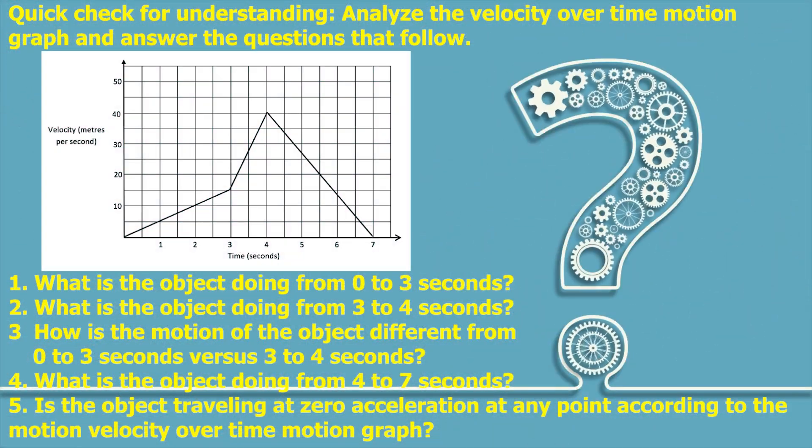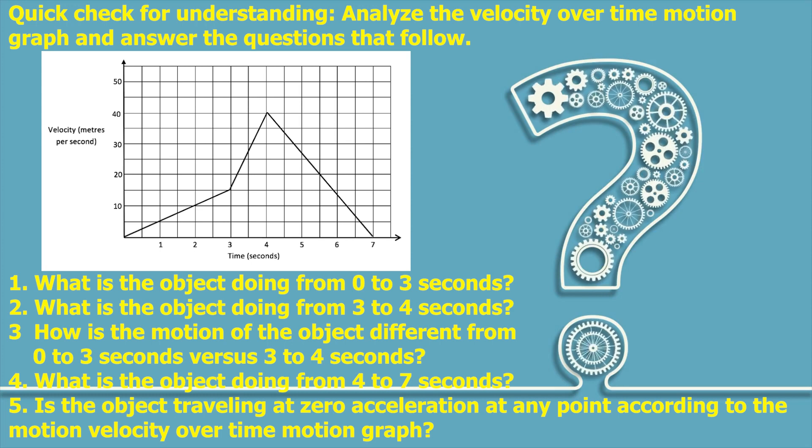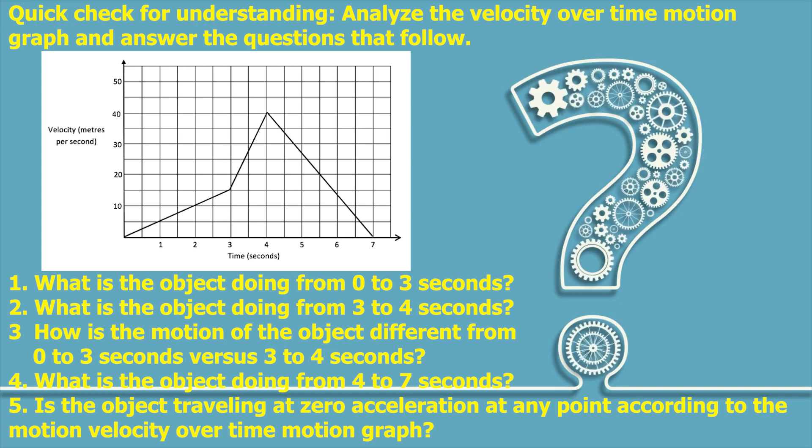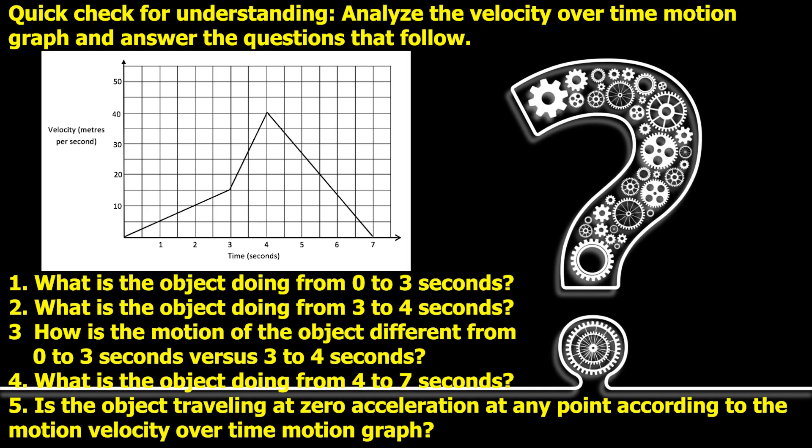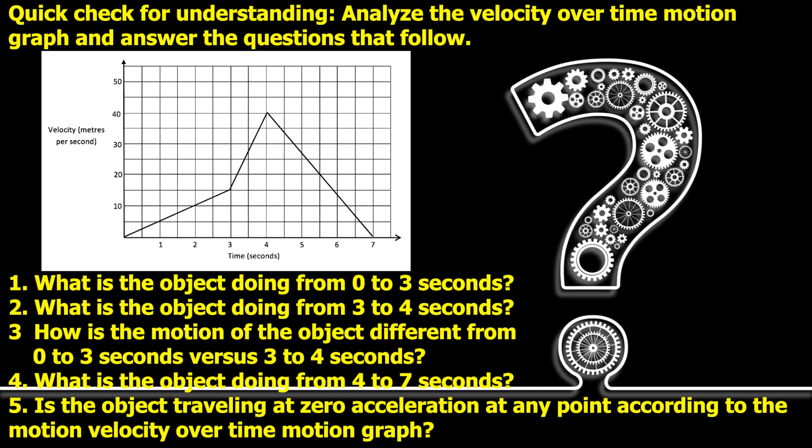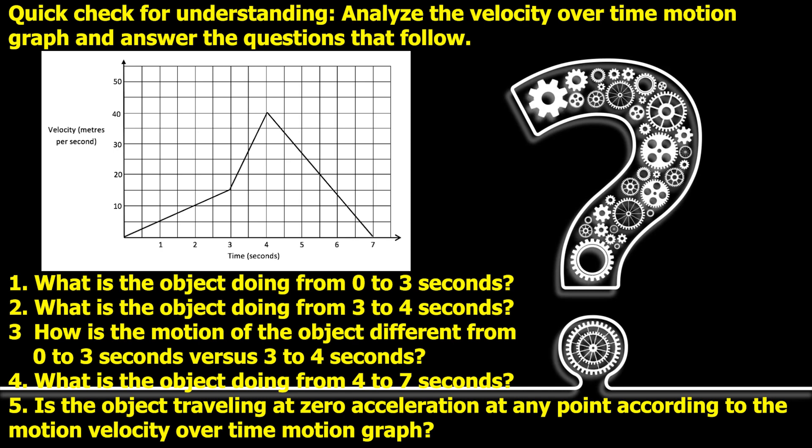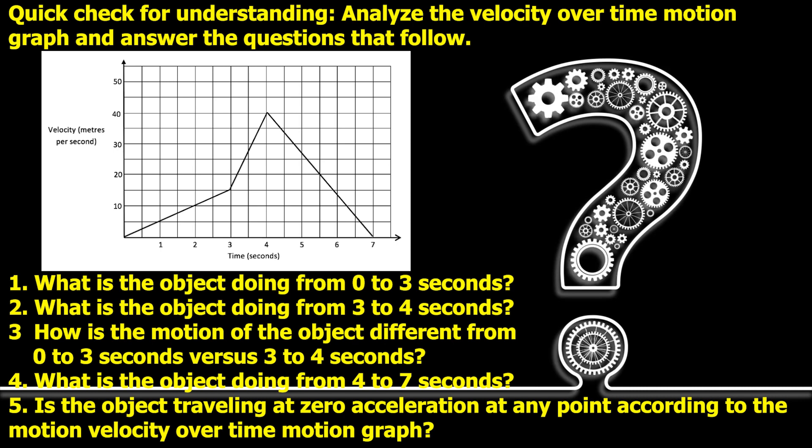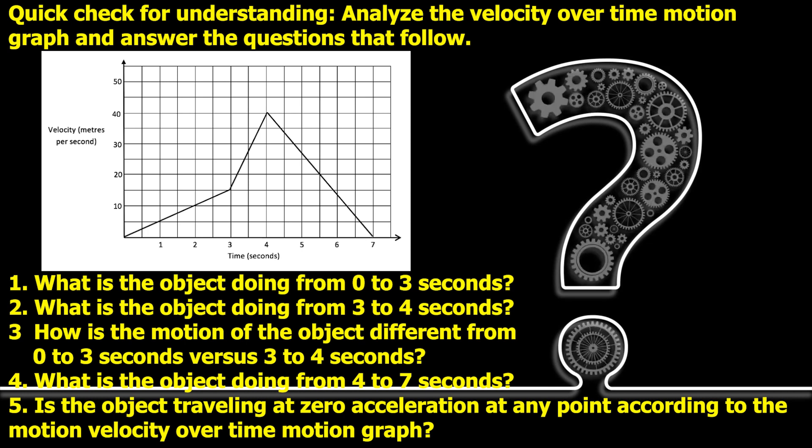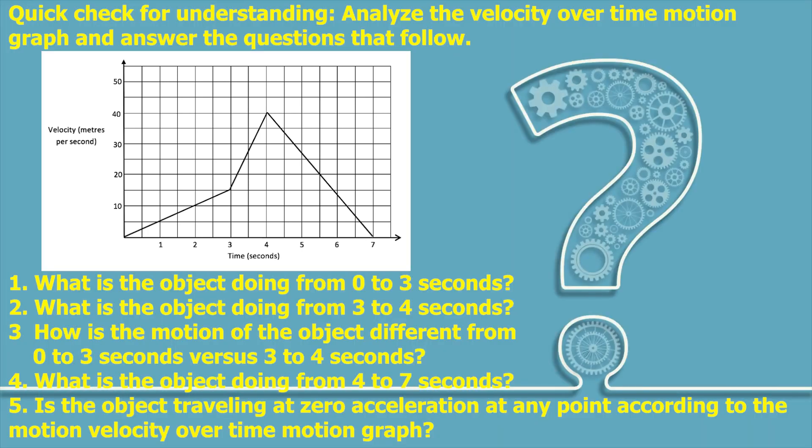Quick check for understanding. Analyze the velocity over time motion graph and answer the questions that follow. Number one, what is the object doing from zero to three seconds? Number two, what is the object doing from three to four seconds? Number three, how is the motion of the object different from zero to three seconds versus three to four seconds? Number four, what is the object doing from four to seven seconds? Number five, is the object traveling at zero acceleration at any point according to the motion velocity over time motion graph?